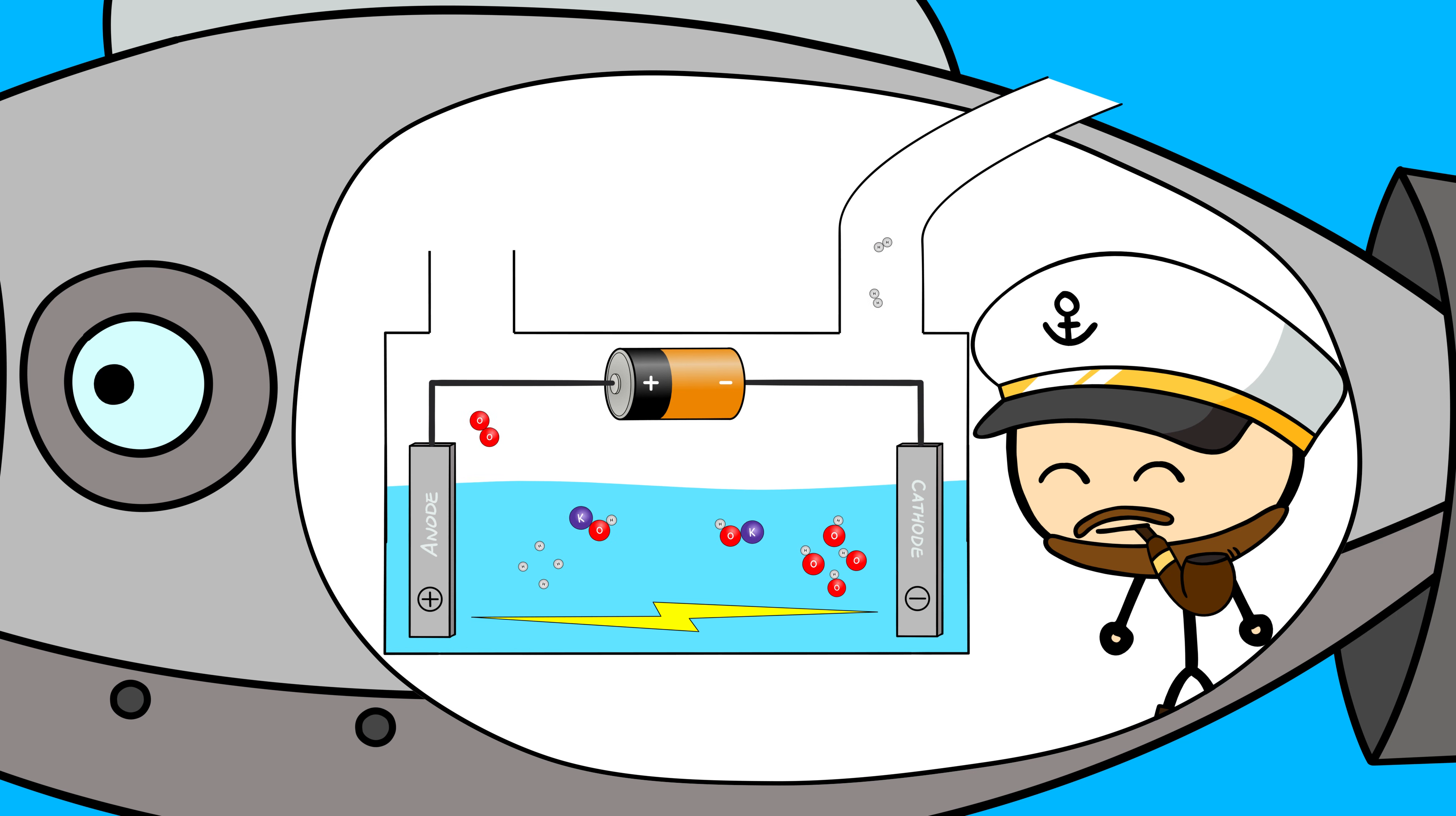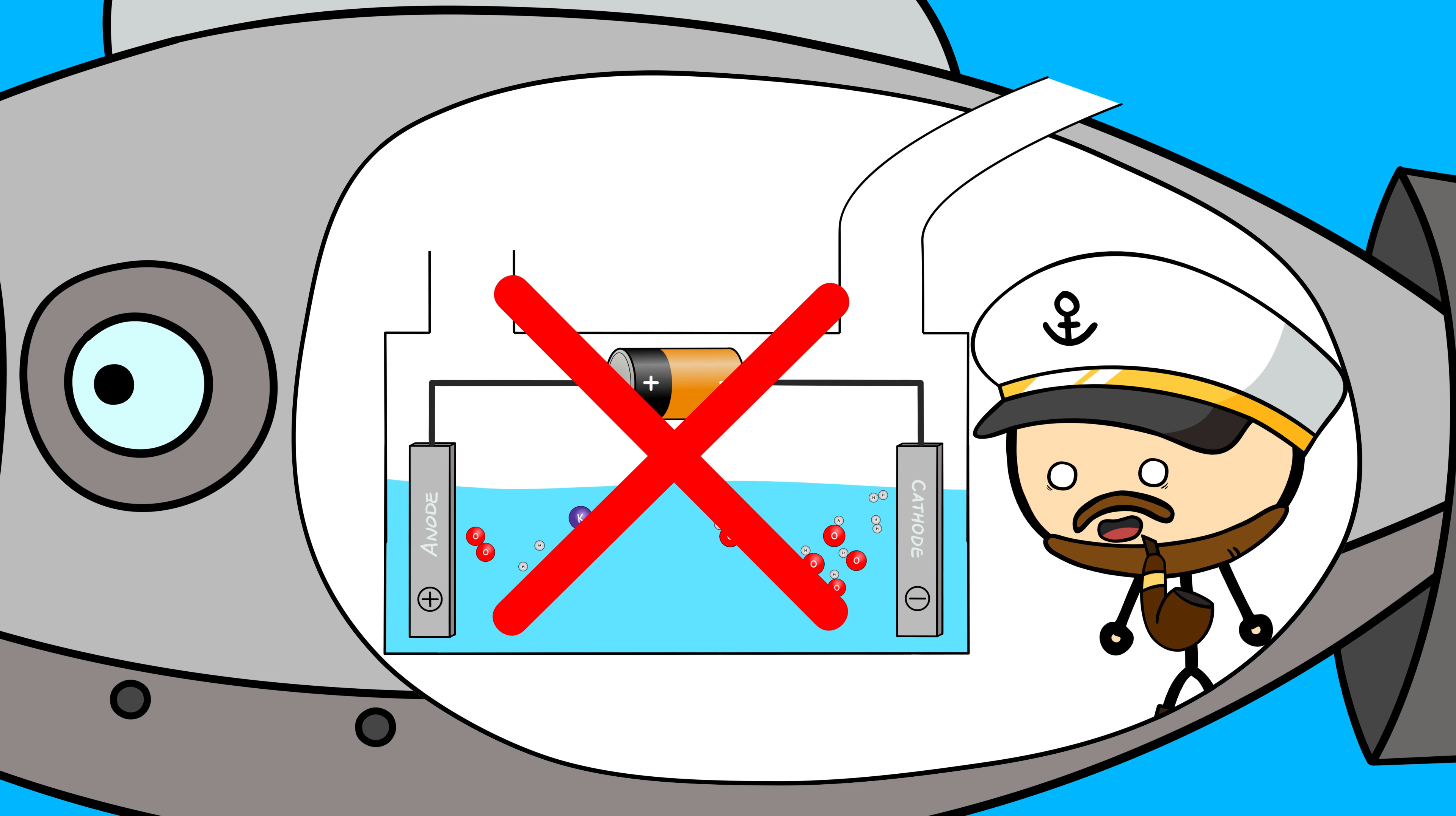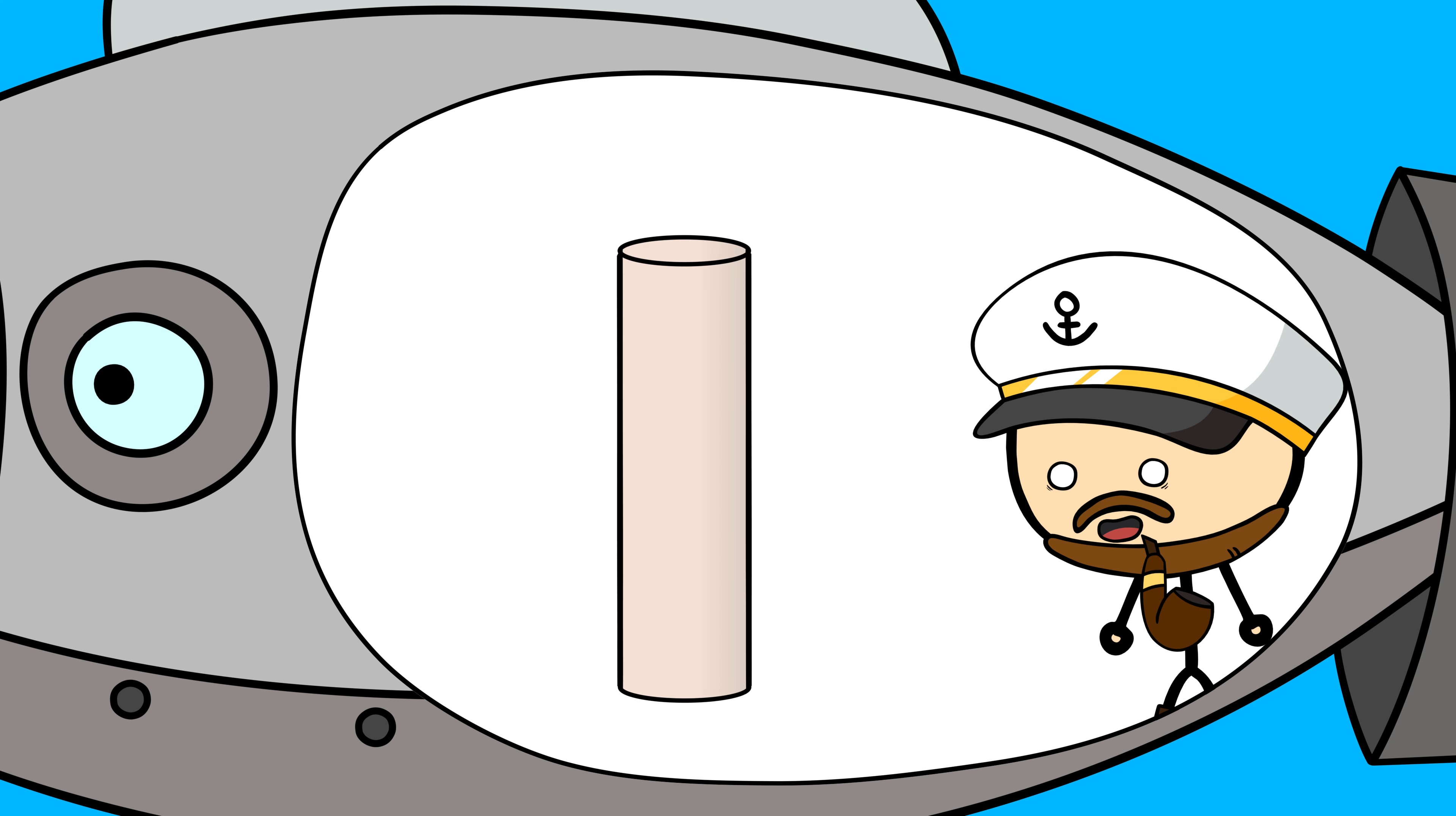But what happens when some system fails and electrolysis is not an option? What then? Well, in such a scenario, sailors rely on what is referred to as an oxygen candle. This cylindrical object is a mixture of sodium chloride and iron powder.